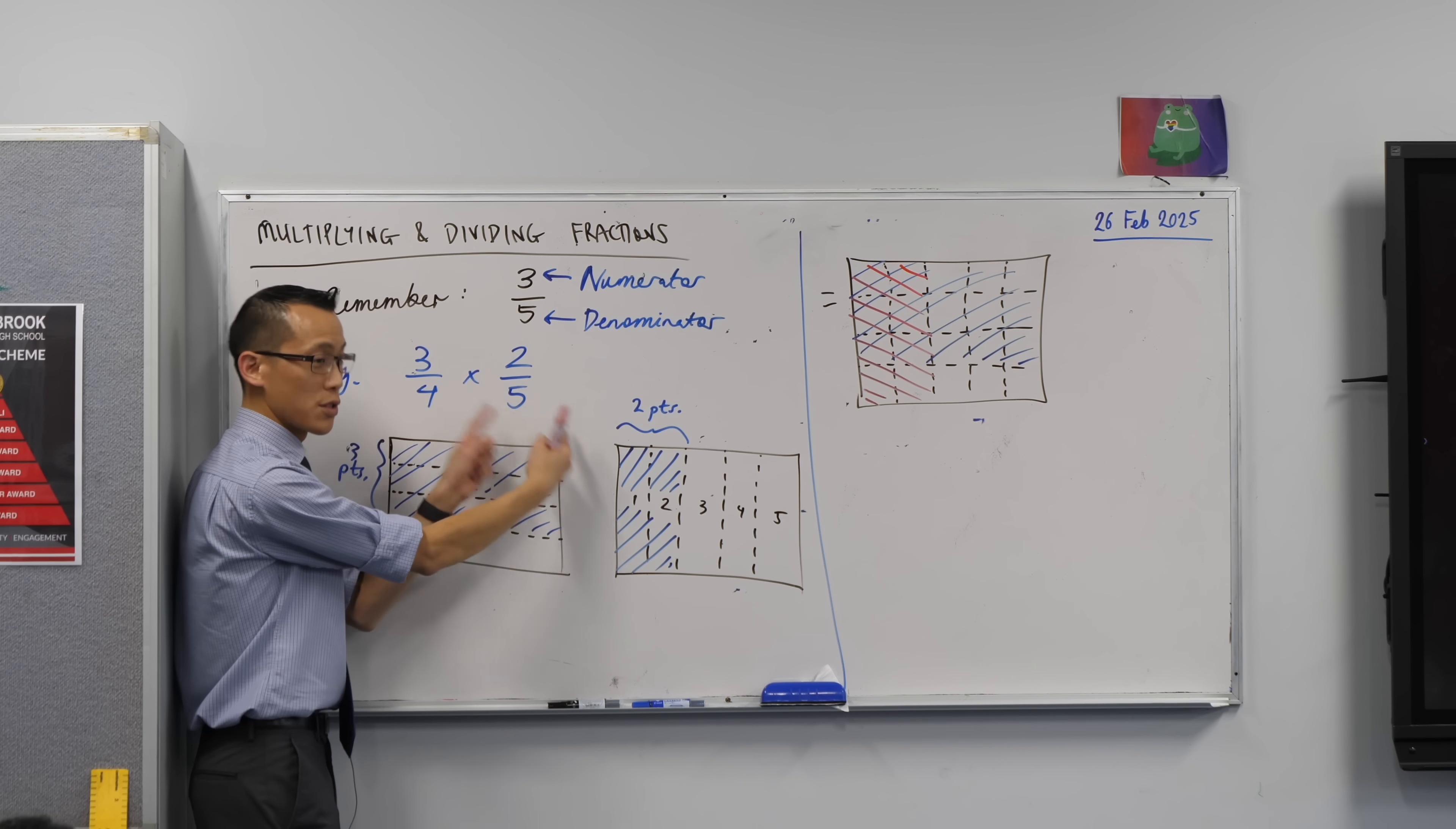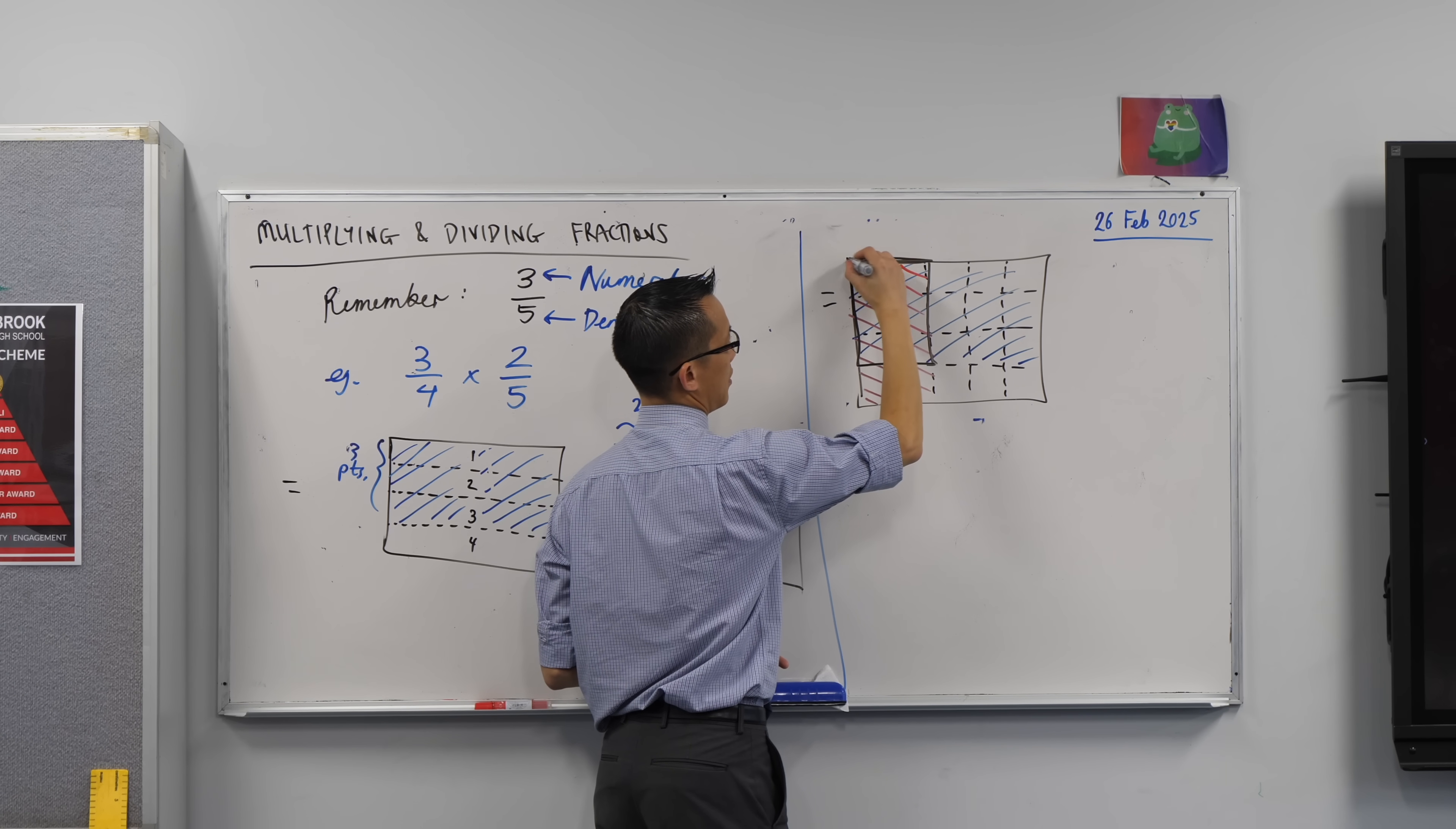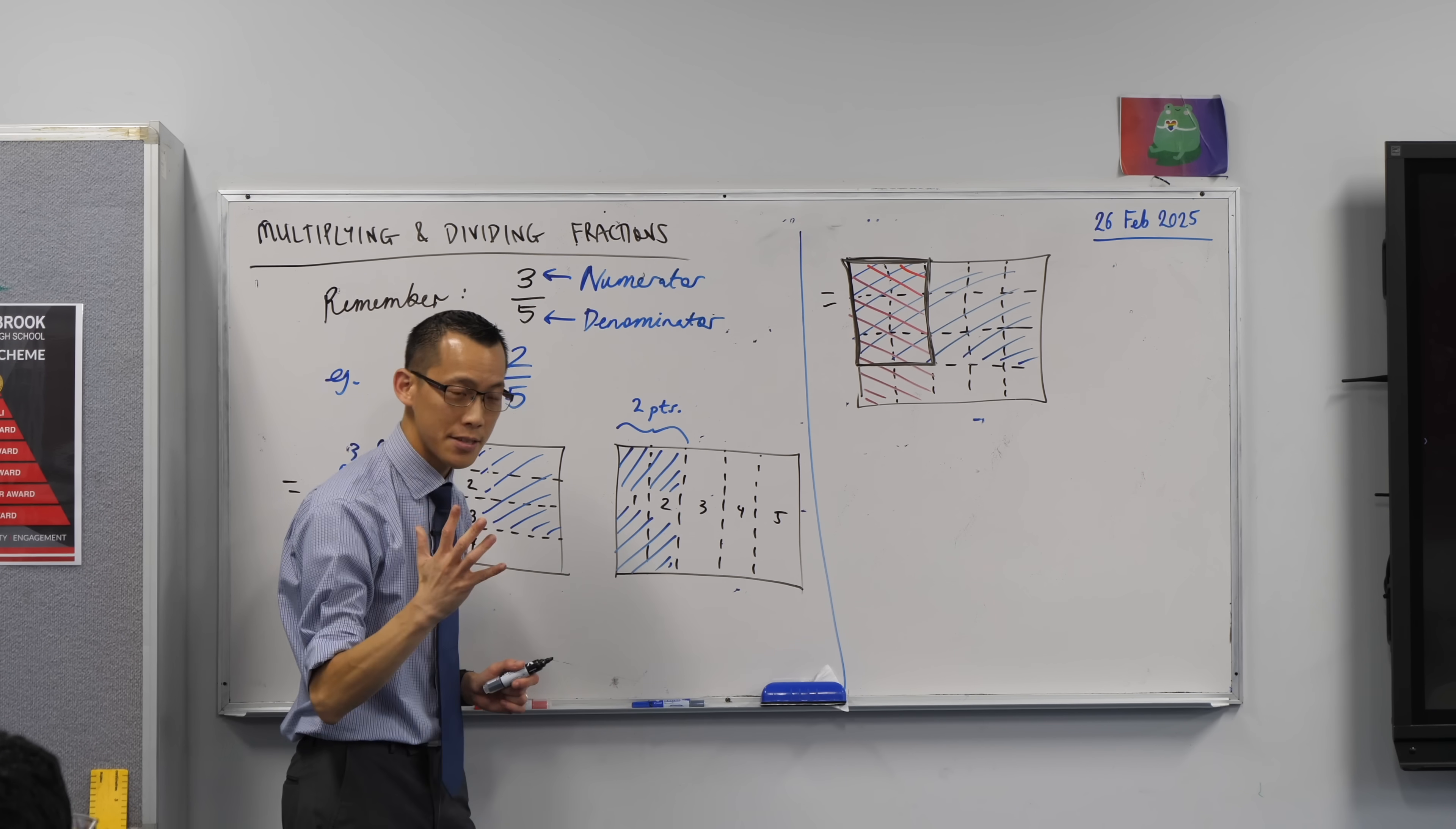Three quarters times two-fifths is this overlapping section. Let's try and highlight it and make it really, really obvious. Here it is. This is the part that has both colours in it. And do you remember, coming back to this first pair of rectangles, I numbered these one, two, three, four, quarters. I numbered these one, two, three, four, five, fifths.